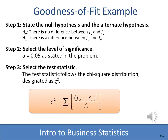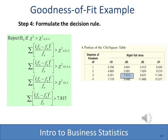We're still doing hypothesis testing, so we use the five steps. Step one: state the null and alternate hypothesis — the null is there is no difference between what we observed and what we expected; the alternate is that there is a difference. Step two: state the level of significance, which we choose as 0.05. Step three: choose the test statistic — since this involves categorical data comparing observed to expected, we use chi-square. Degrees of freedom are k-1; with four categories the degrees of freedom is three. Chi-square is a one-tail test, and the critical value at three degrees of freedom and 0.05 significance is 7.815.